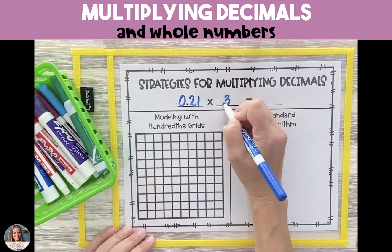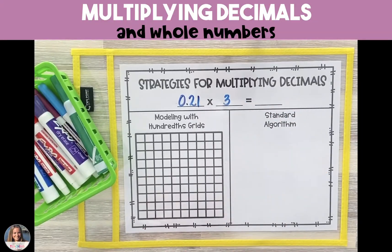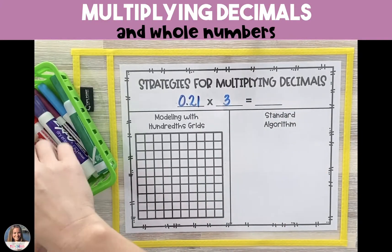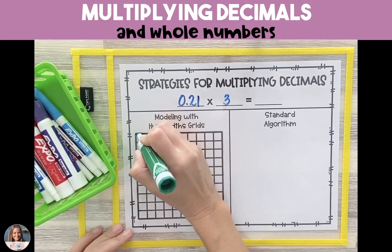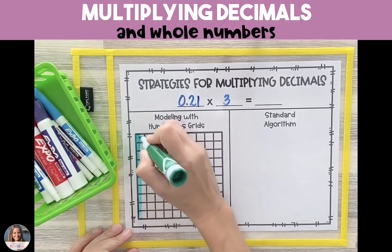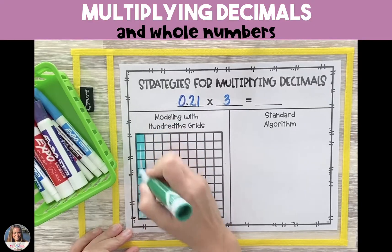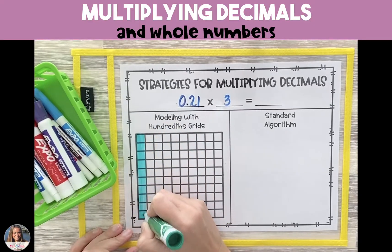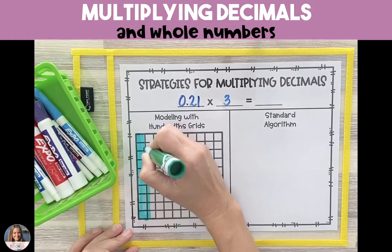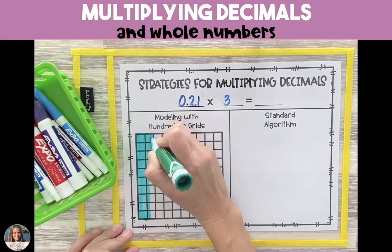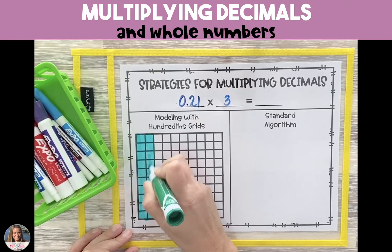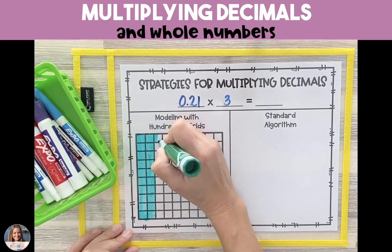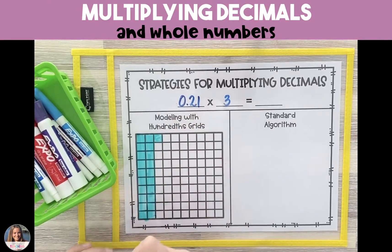You can show how to multiply a decimal by a whole number either with a visual model or the standard algorithm. The visual model is a 10 by 10 hundredths grid. Every row is worth 10 and every column is worth 10 of the hundred.